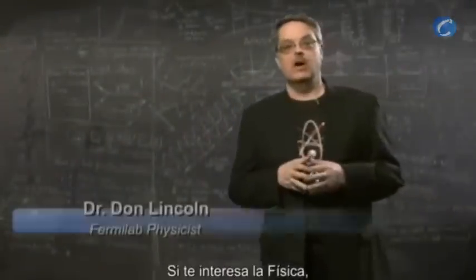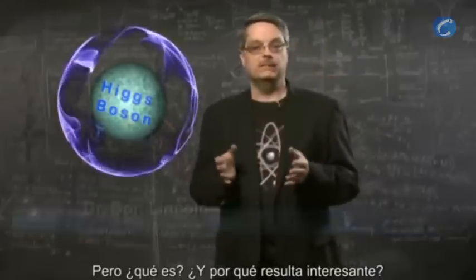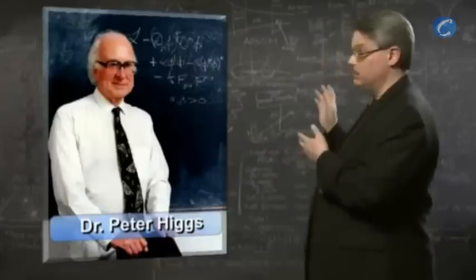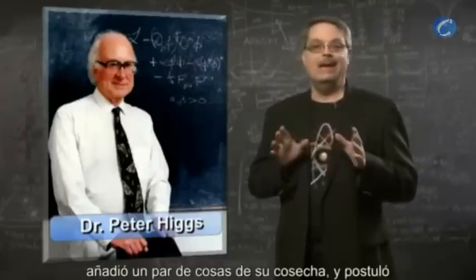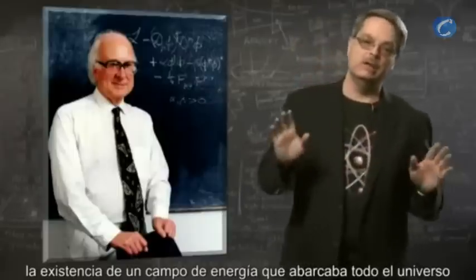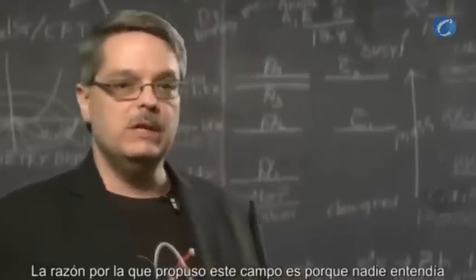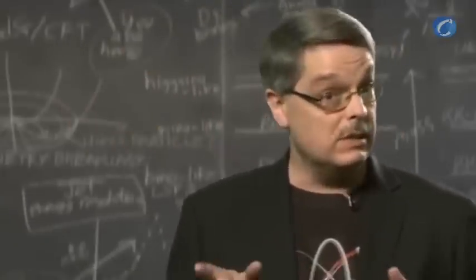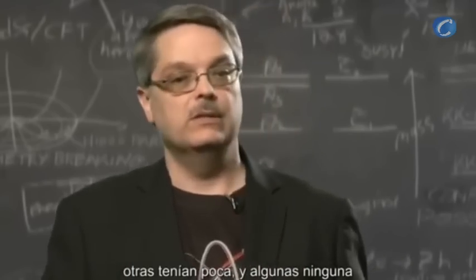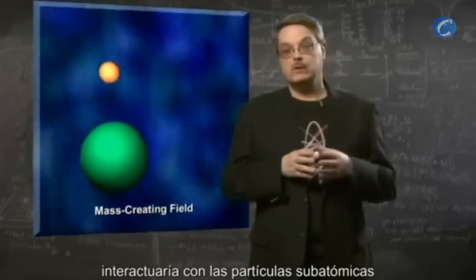If you've had any interest in physics at all, you've heard about a thing called the Higgs boson. But just what is it and why is it interesting? In 1964, a physicist by the name of Peter Higgs took some ideas that were floating around at the time, added an insight or two of his own, and proposed that there was an energy field that permeated the entire universe. This energy field is now called the Higgs field. The reason he proposed this field was that nobody understood why some subatomic particles had a great deal of mass, while others had little and some had none at all. The energy field that Higgs proposed would interact with the subatomic particles and give them their mass.